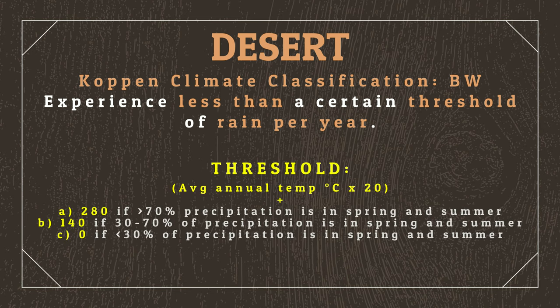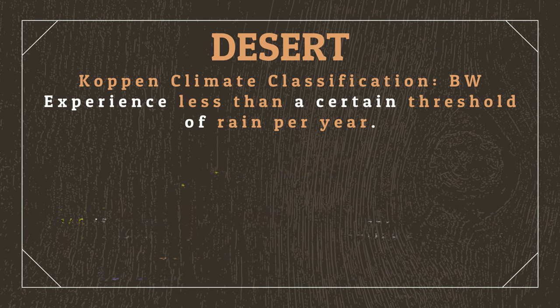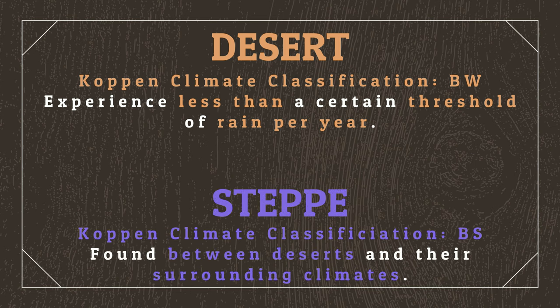Areas that experience less than 50% of the precipitation threshold are considered arid, while areas that experience between 50% and 99% of the threshold are considered semi-arid, forming a transitionary climate zone called a steppe, which is found between deserts and their surrounding climates.